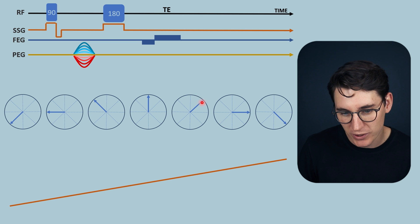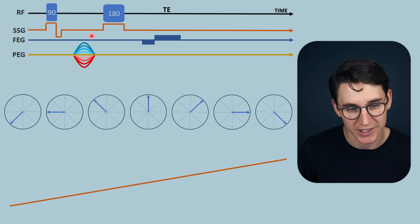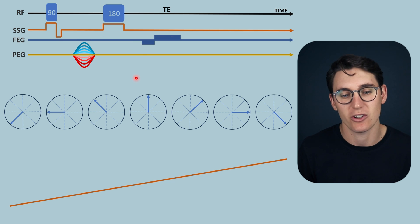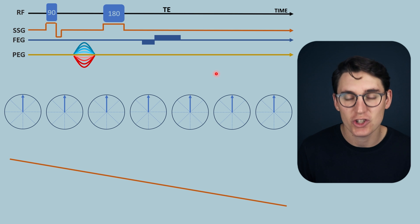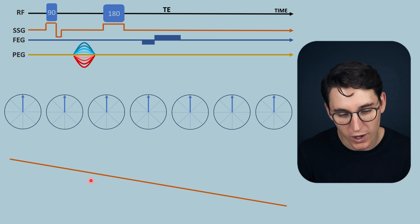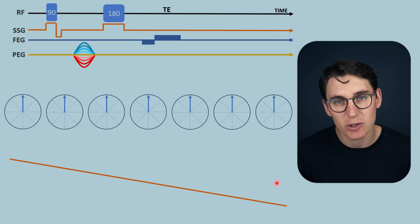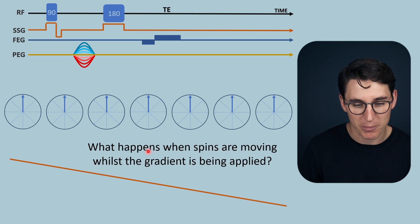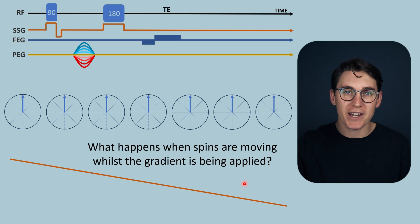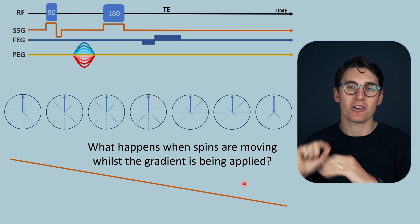This phase change happens during any gradient applied in our pulse sequence. When we apply an equal and opposite gradient — as in our slice selection or frequency encoding gradients — we can account for that phase change and cause rephasing of the spins. Crucially, this assumes that spins stay in the same location whilst we're applying these gradients. If a spin remains in the same location, it receives an equal and opposite gradient effect that allows for rephasing. But what happens when spins are moving, say in blood vessels, whilst the gradient is being applied?